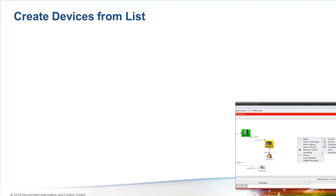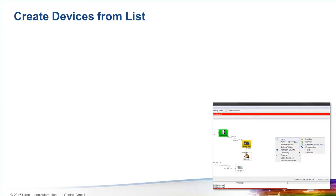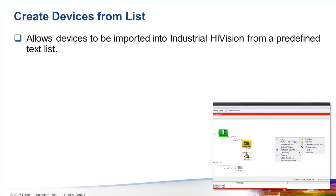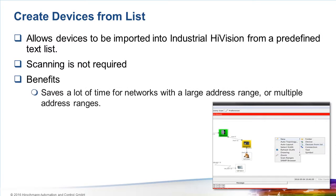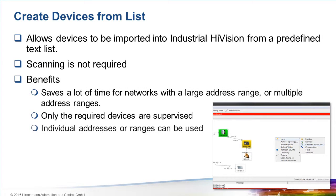As I mentioned, this version of Industrial HiVision is targeted at the management of large networks. One of the issues with large networks is how to get the network devices into Industrial HiVision. Before this version, there were two methods to do it. The first was to enter the devices manually. Clearly, this is impractical on a large network.